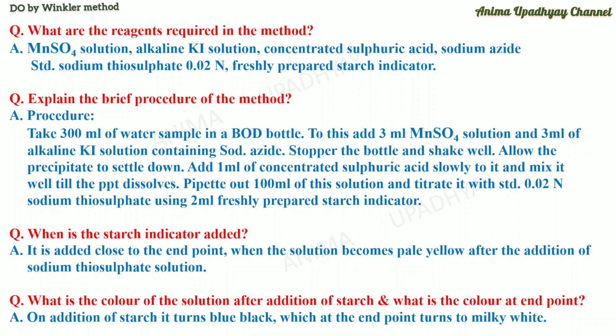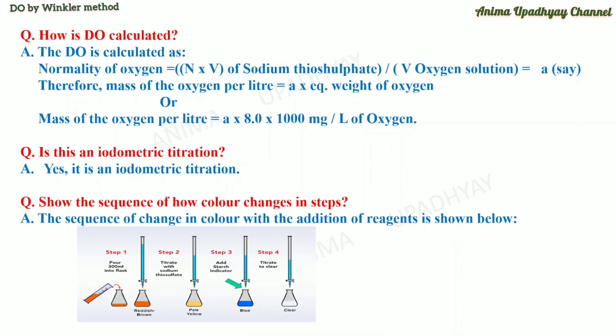What is the color of the solution after addition of starch, and what is the color at the end point? On addition of starch, it turns blue-black, which at the end point turns to milky white. How is DO calculated? The normality of oxygen is given by: normality and volume of sodium thiosulfate divided by the volume of sample taken for titration — let this be A. Multiply it with the equivalent weight of oxygen which is 8, and to get it in mg/L, multiply with 1000. This is an iodometric titration; a video on the demonstration of iodometric titration has already been uploaded — the link is in the description box.